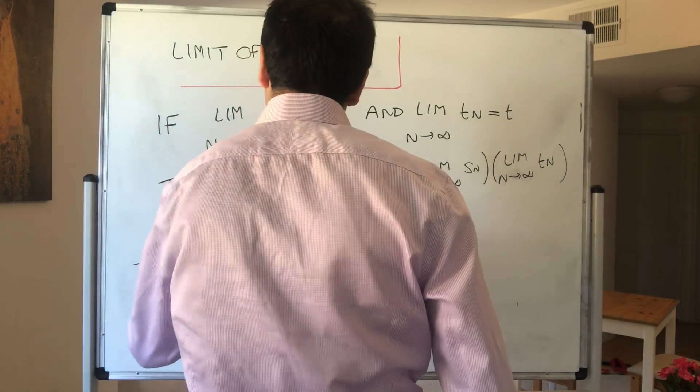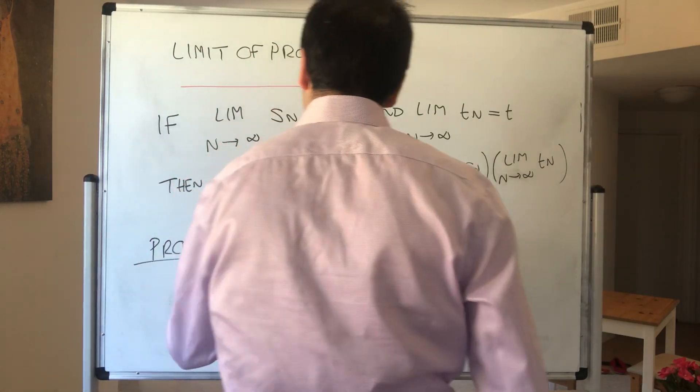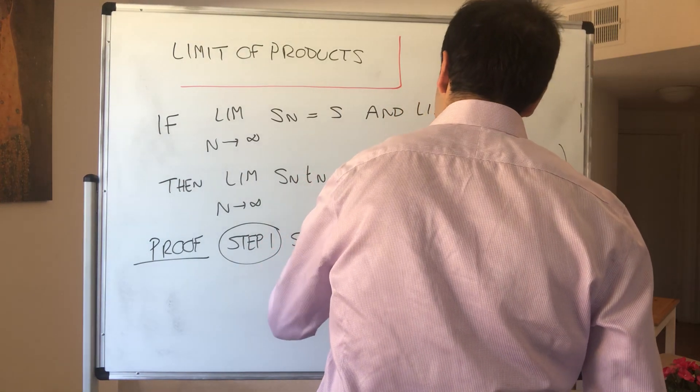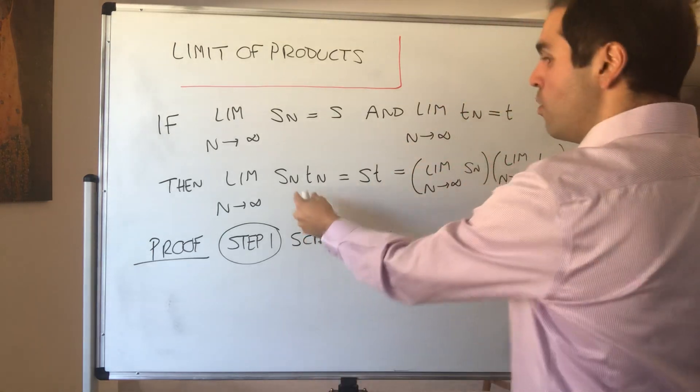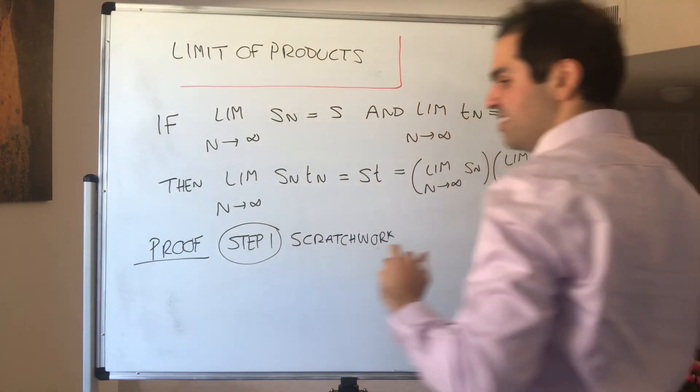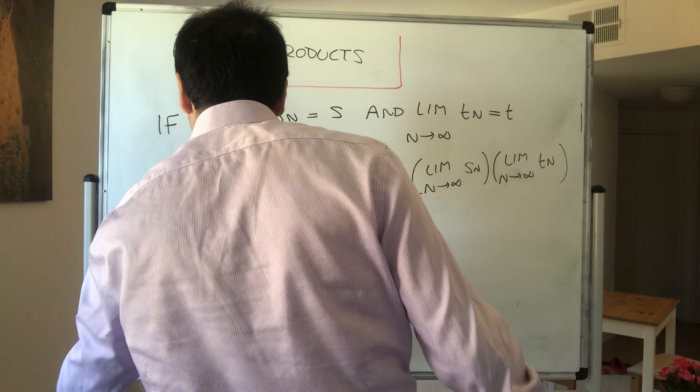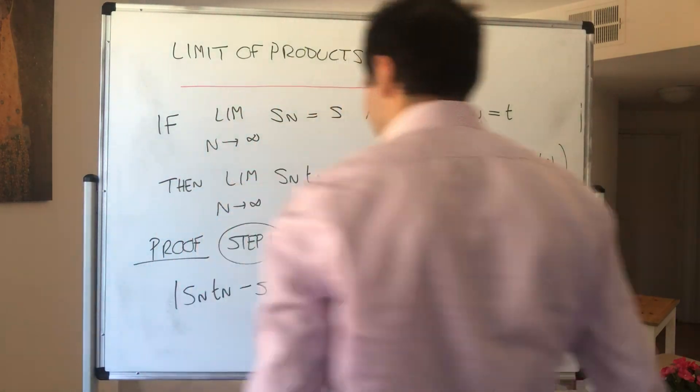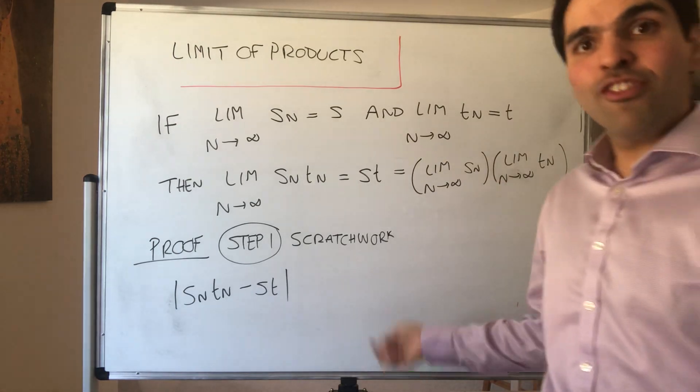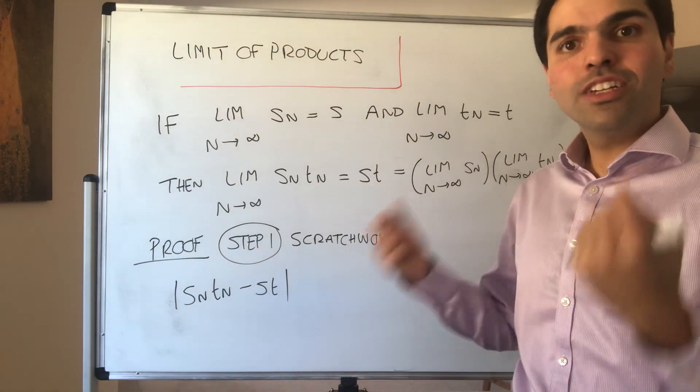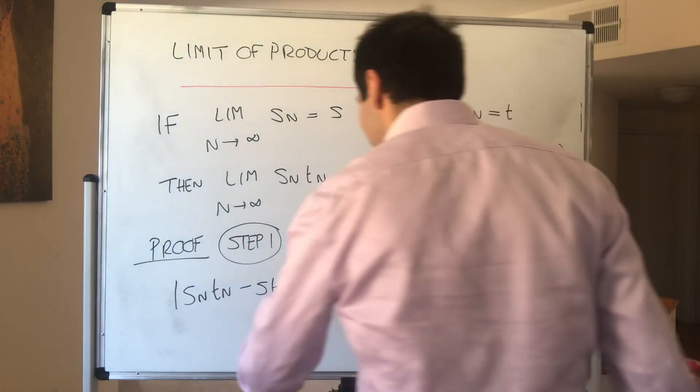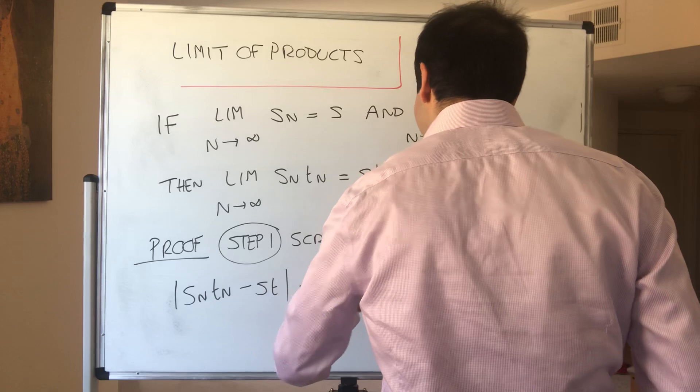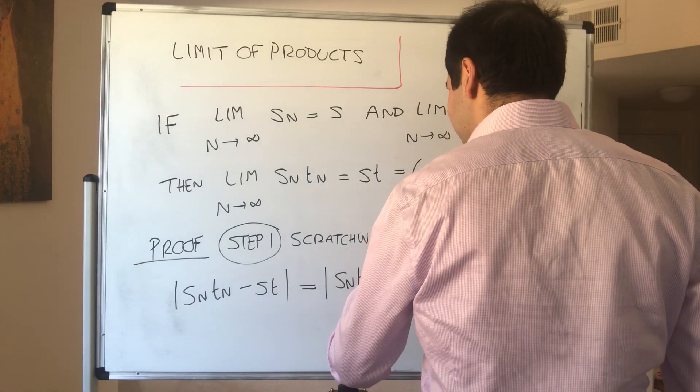So proof. Step one is just some scratch work. What do we want to show? We want to show that this difference is small. So consider Sn Tn minus St and let's apply a clever but very important triangle inequality trick. Take this and subtract and add Sn times T.